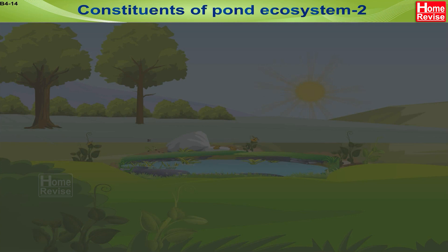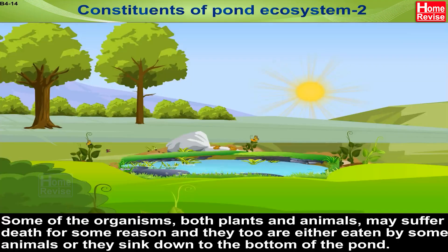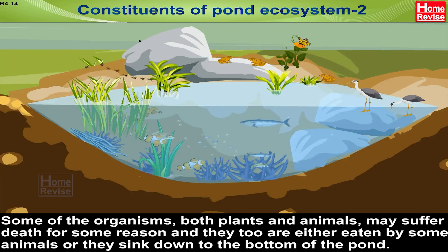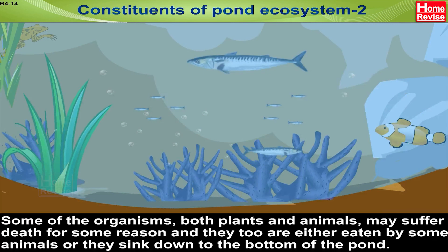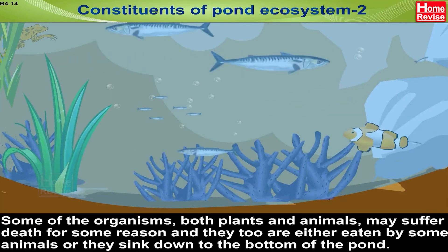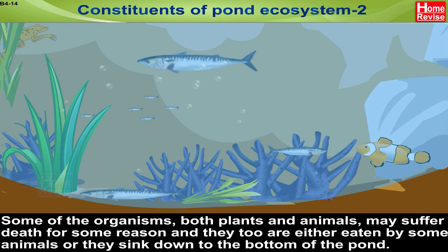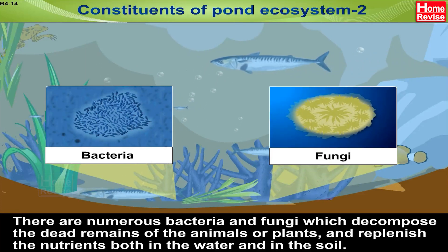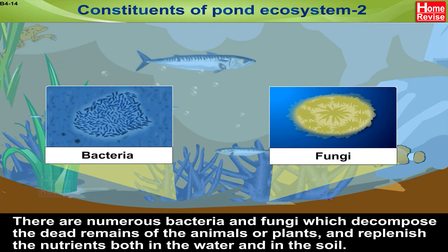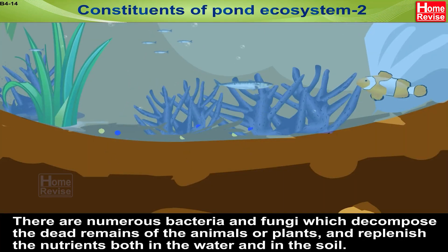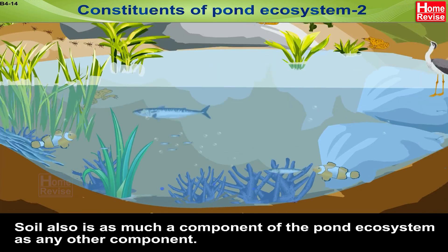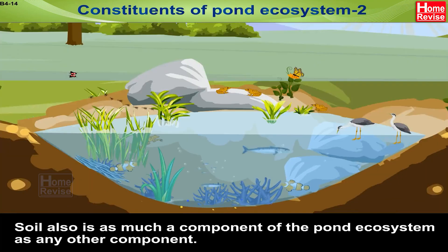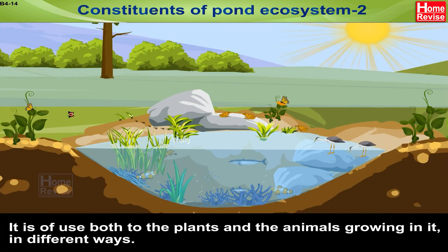Some organisms, both plants and animals, may suffer death for some reason, and they are either eaten by some animals or they sink down to the bottom of the pond. There are numerous bacteria and fungi which decompose the dead remains of animals or plants and replenish the nutrients both in the water and in the soil. Soil is also as much a component of the pond ecosystem as any other component, and is of use to both plants and animals growing in it.